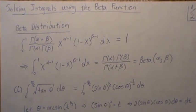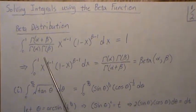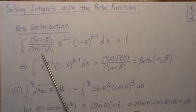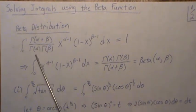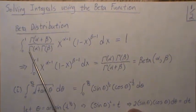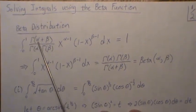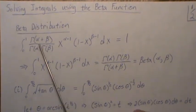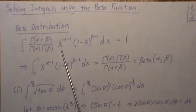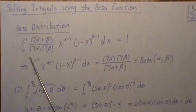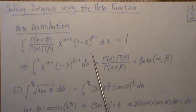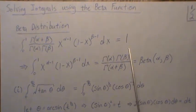So as a reminder, the beta distribution is this piece right here: gamma of α, gamma of β over gamma of α plus β. It lives in the integral 0 to 1, so if we integrate this distribution it integrates to 1.